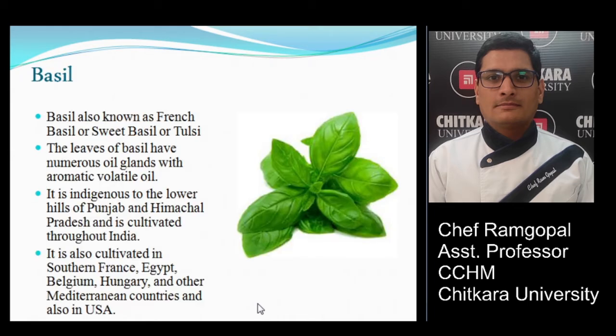The first herb is basil. Basil is one of the holy plants, also known as French basil, sweet basil, or tulsi. It is a sacred plant in India found in every household. The leaves have numerous oil glands with aromatic volatile oil. It is indigenous to the lower hills of Punjab and Himachal Pradesh, cultivated throughout India and also in southern France, Egypt, Belgium, Hungary, and other Mediterranean countries, as well as the USA.